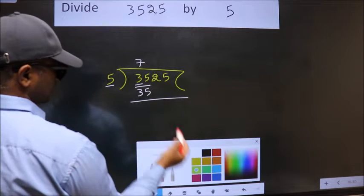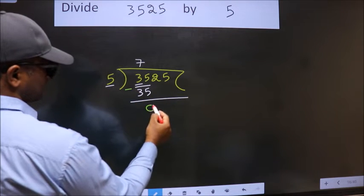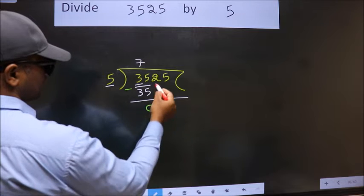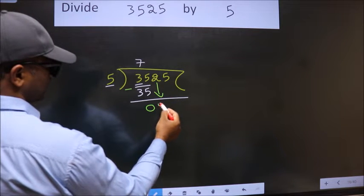Now, we should subtract. We get 0. After this, bring down the beside number. So, 2 down.